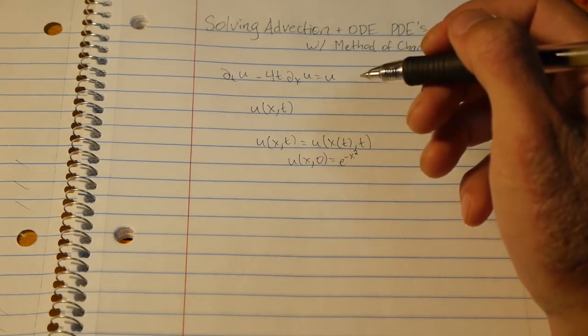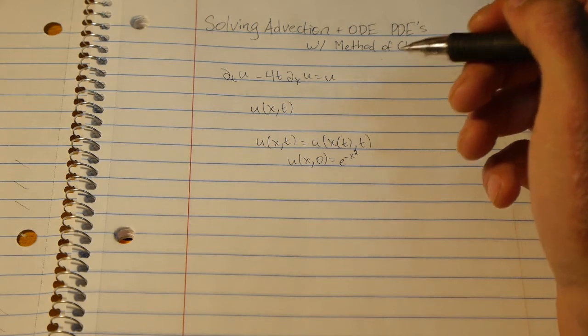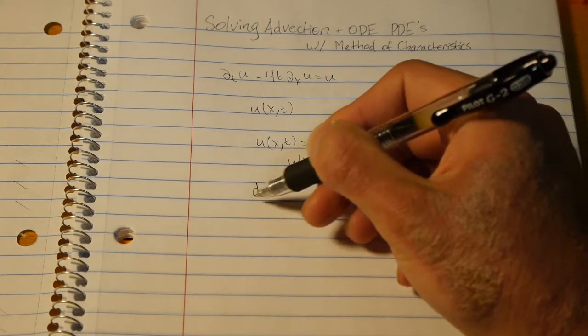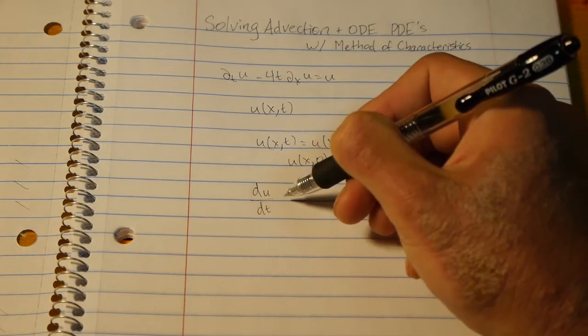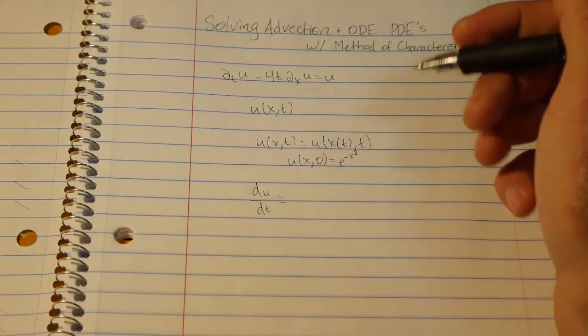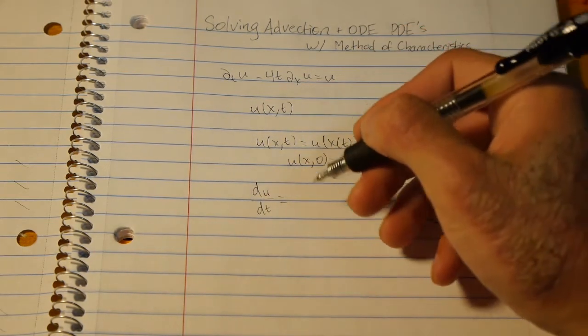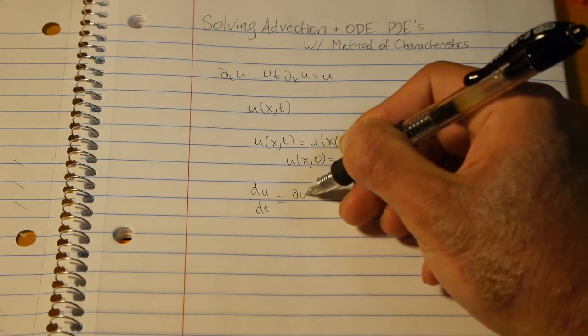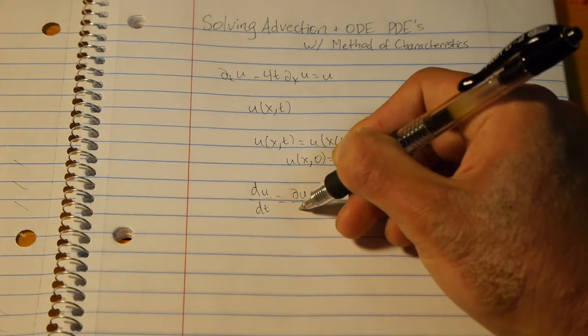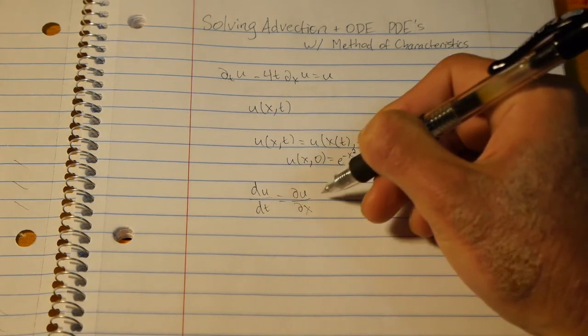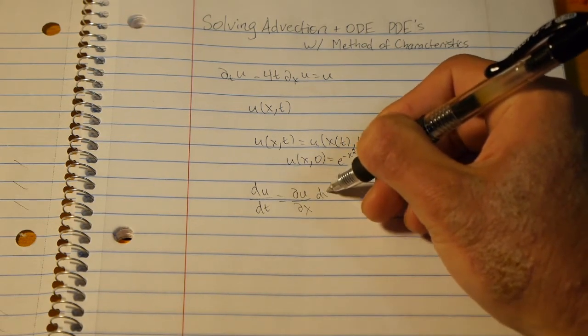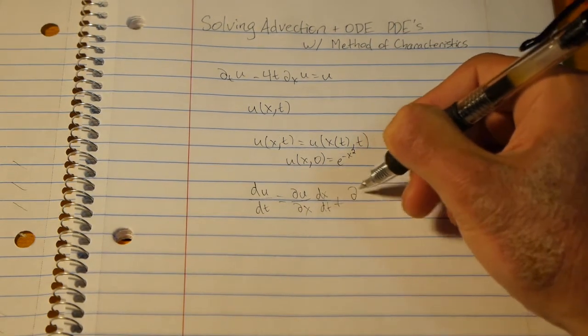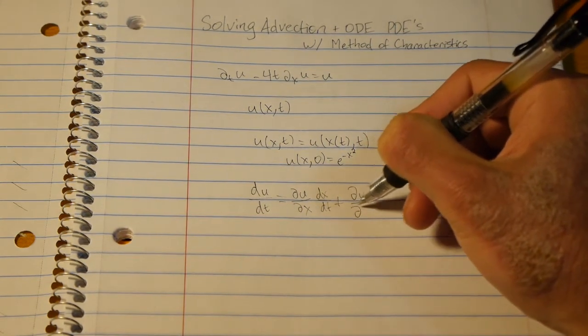Now what we can do here is by the chain rule we know that du/dt using the method that we've found to rewrite x in terms of t, we have ∂u/∂x dx/dt plus ∂u/∂t.